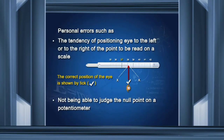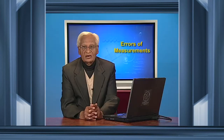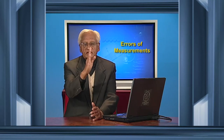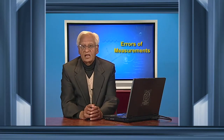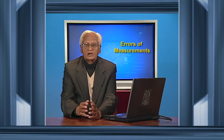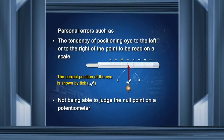The third category of systematic errors are personal errors, such as the tendency of positioning one's eye to the left or right of the point to be read on a scale. Your eye must be in line with or directly above that point — if you are to the left or right, you will not measure correctly. In electrical experiments, for example with a potentiometer, you may not be able to judge the null point properly, and that can also cause personal error.